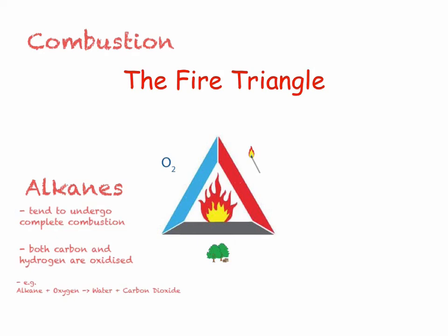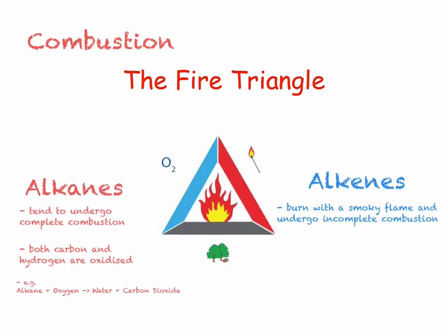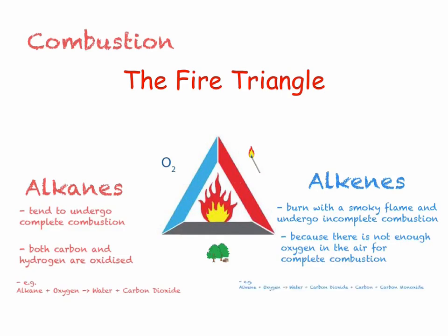This means that alkanes burn with a clean flame. Alkenes, on the other hand, burn with a smoky flame. In a large amount of oxygen, alkenes are able to combust completely. However, there often isn't enough oxygen — in fact, at 21% oxygen in our air, there is not enough oxygen. So when we burn them, they undergo incomplete combustion. In this, we still produce carbon dioxide and water, but we also produce carbon and carbon monoxide.